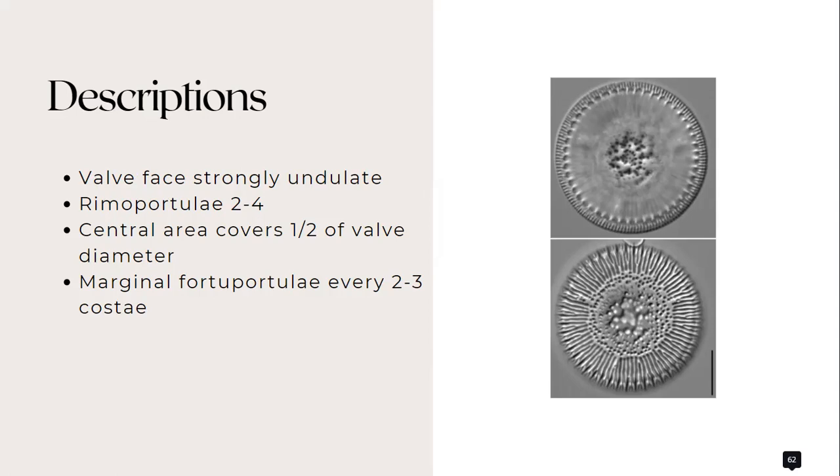And it also has a central area that covers 50% to 65% of the valve diameter and is defined by the terminus of the marginal alveolate striae. It also has marginal fultoportulae that occur on every two-to-three costae, which is represented by the shadow lines in the figure.